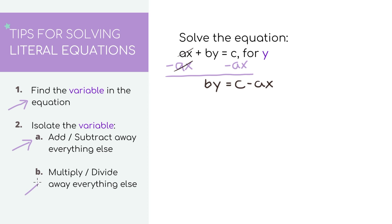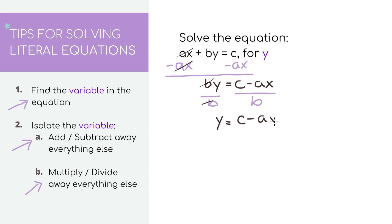For our next step, let's figure out what we can multiply and divide away to isolate our variable y. Since it's by, or b times y, let's get rid of it by doing the opposite of multiplication and divide by b on both sides. On the left side the b's cancel, so we're just left with y. On the right side, we don't have any like terms to combine, so our answer is y equals c minus ax over b.